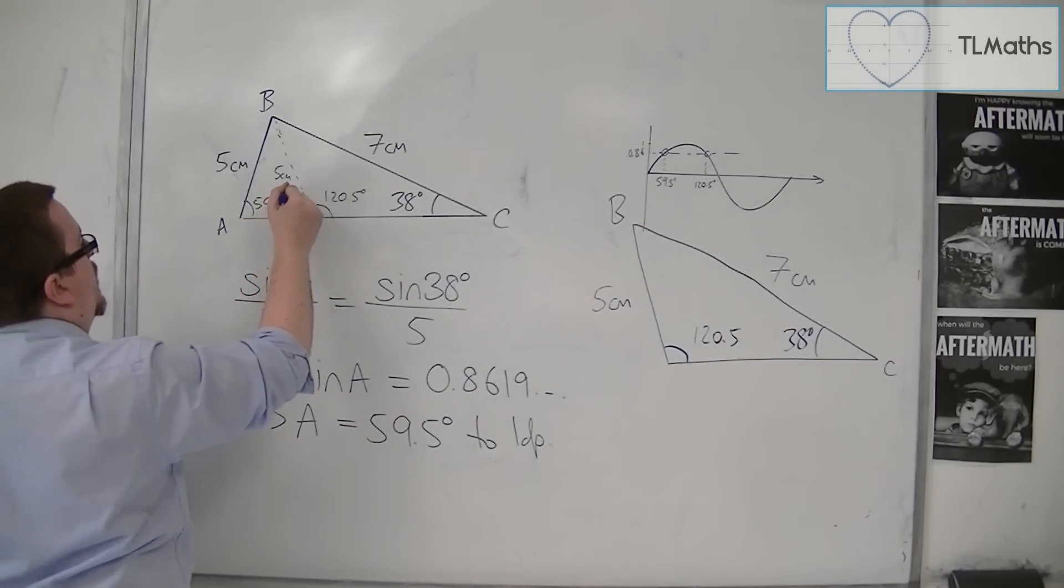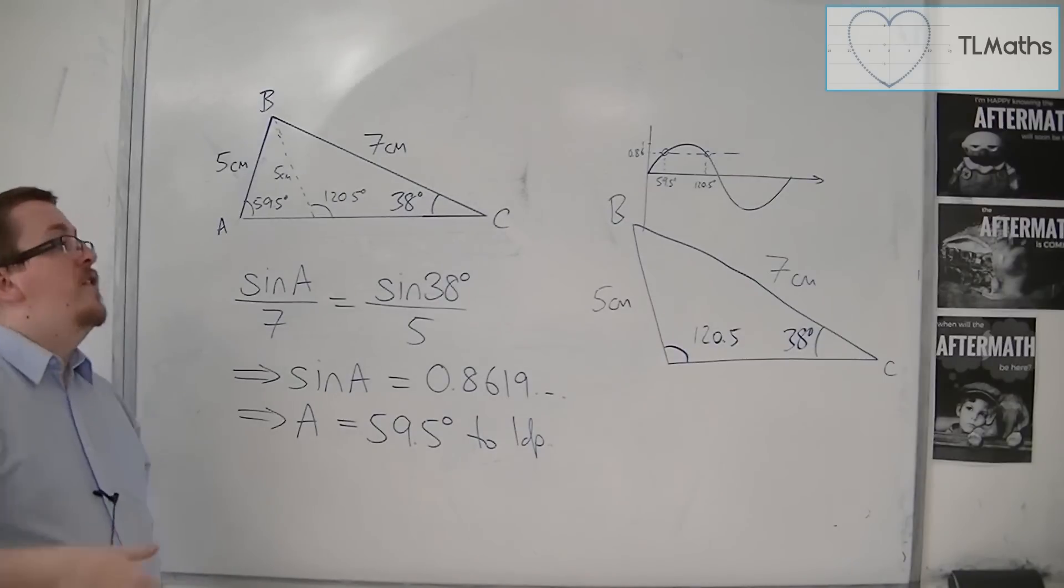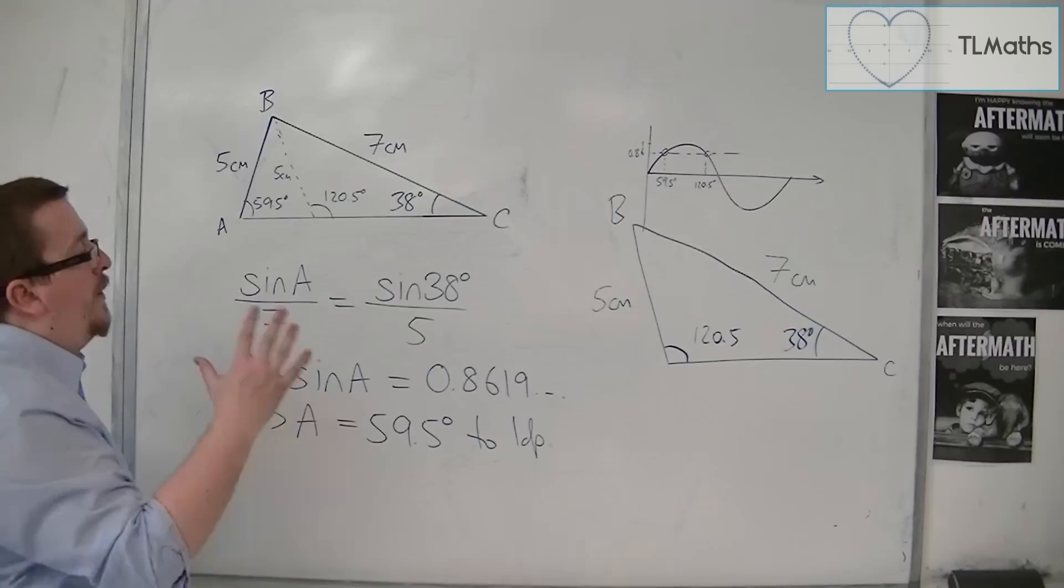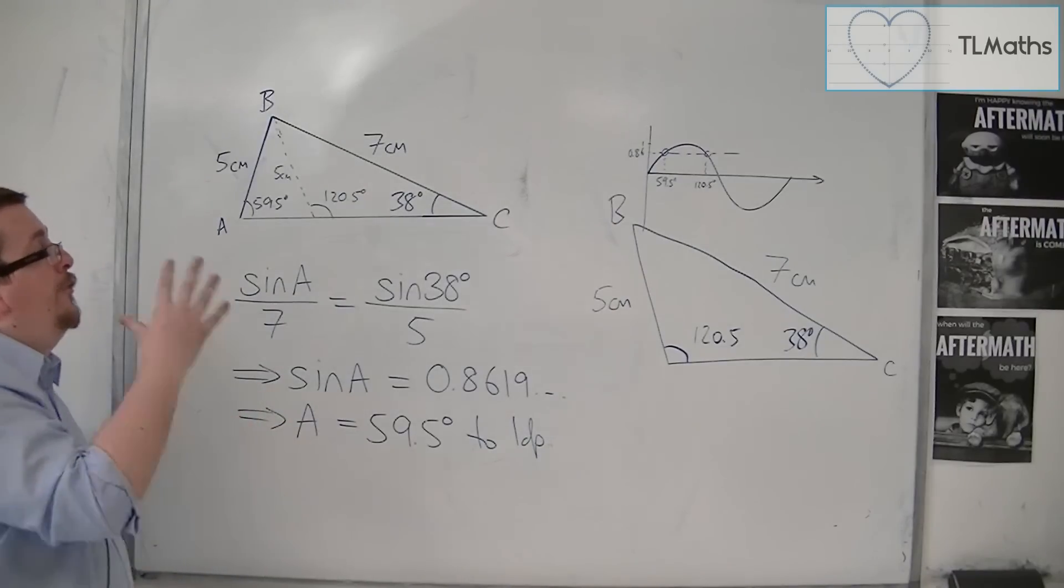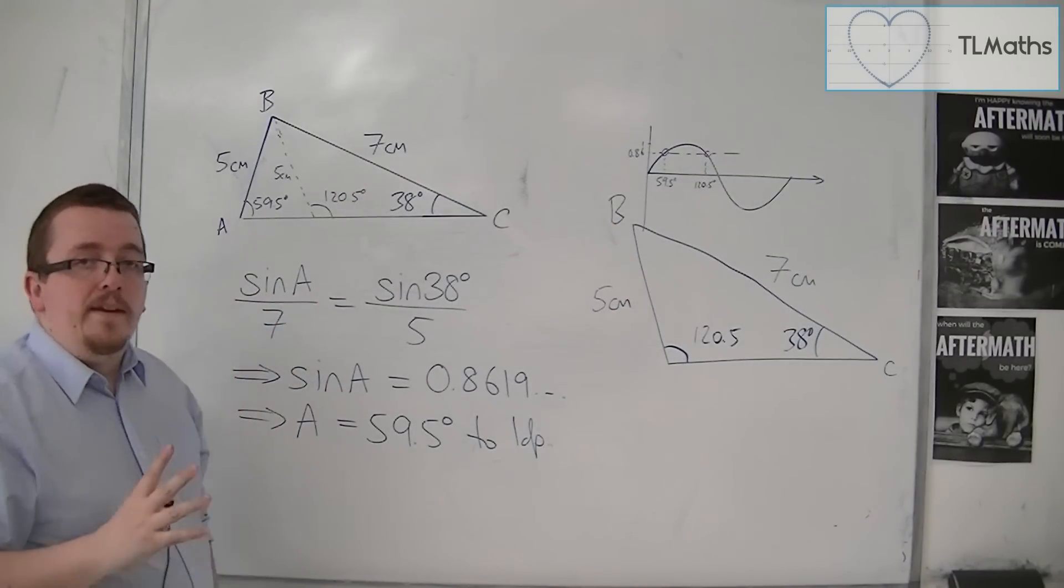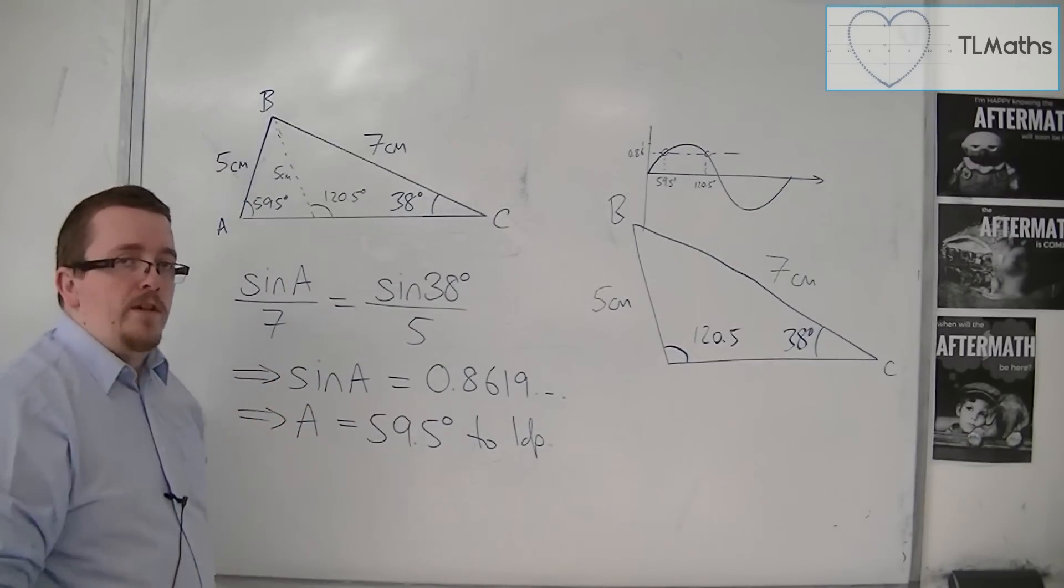So it's quite a curious situation. But there are actually two different triangles that we could be looking at here. So be aware that for certain triangles, given certain sides and angles, there may be more than one triangle that can be drawn.